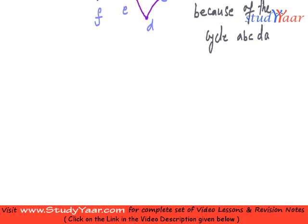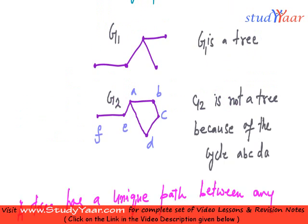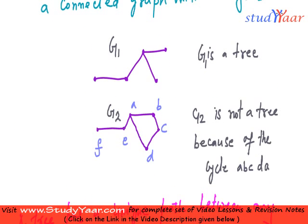Another definition of a tree is, it is a graph in which there exists a unique path between any two pair of vertices. A tree has a unique path between any two pair of vertices, why is it so? Because we do not have cycles, that means we always have a unique path.